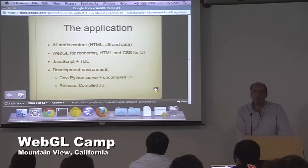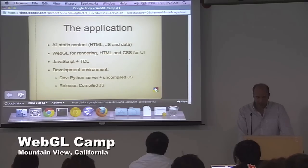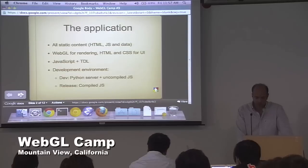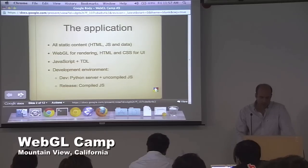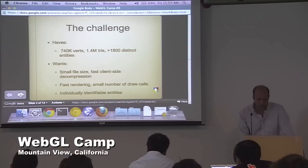If you go look at the source code for Body, you're not going to see a whole lot. This is not really done to protect the code — we would love to have it open — but it's mostly for compacting the code base so it can be transferred quickly to the client.